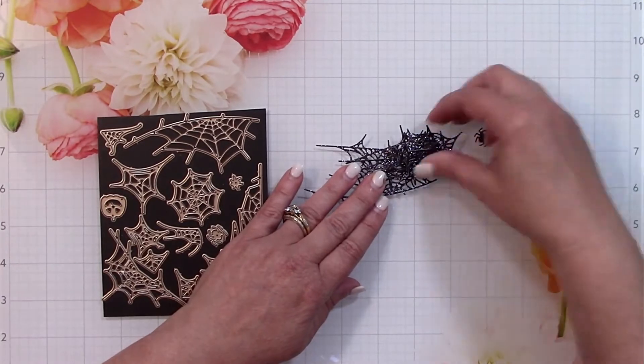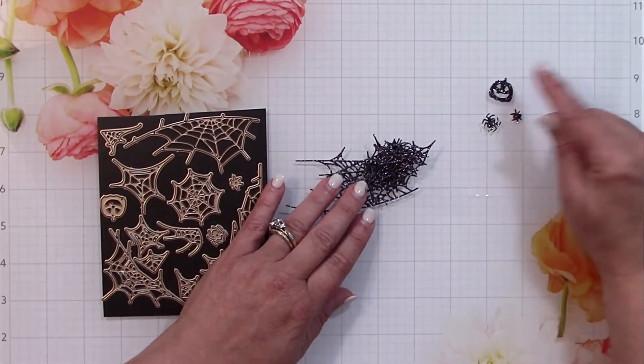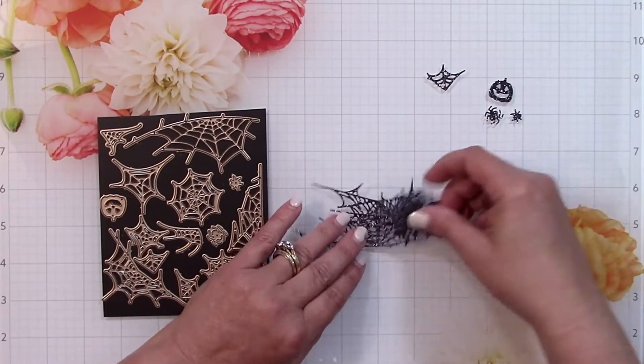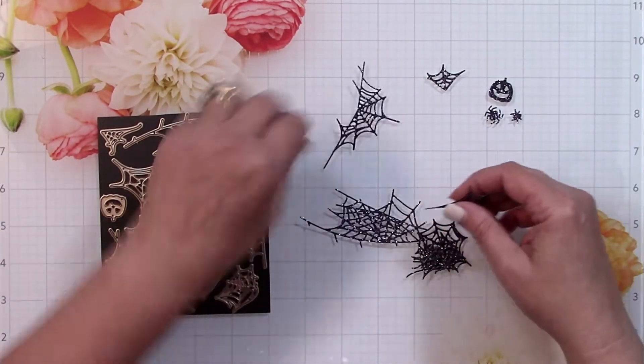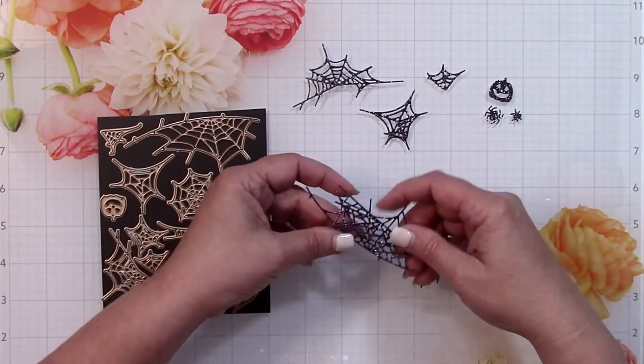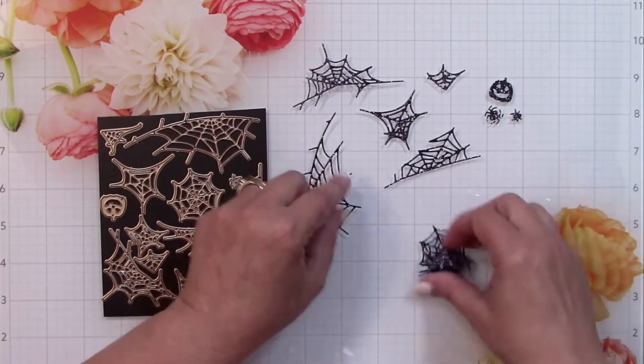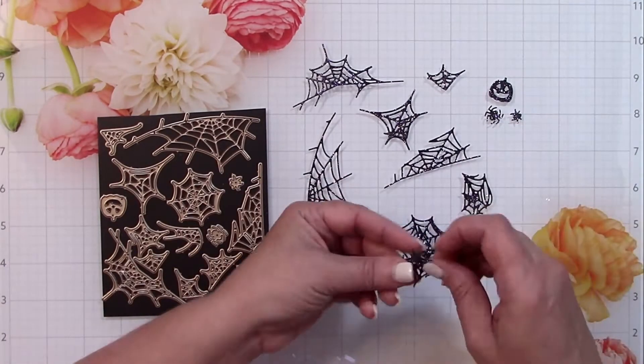It has the two spiders plus the jack-o-lantern, but then you have all these cool webs and they're all different sizes and shapes so they'll fit on pretty much anything that you're looking for.